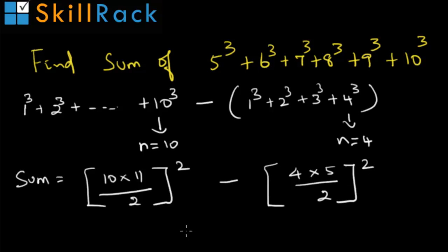Using the formula, n into n plus 1 by 2 the whole square, we can write the sum as above. We get 55 square minus 10 square, which is nothing but 2925.